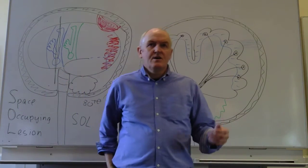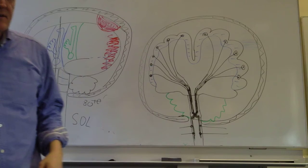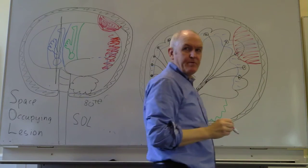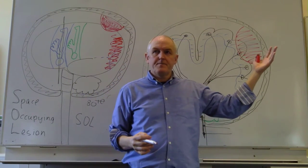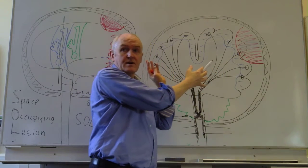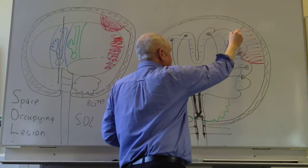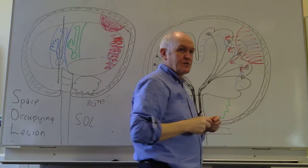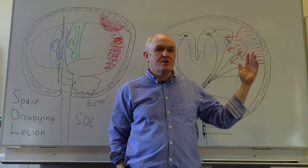Suppose someone's been bashed on the left-hand side of their head. They might be developing a space-occupying lesion — it could be a haematoma, for example, or developing cerebral contusion. So they've got a space-occupying lesion on the left side. That's going to increase intracranial pressure all over, but first it's going to press on the left side of the brain — specifically, it's pressing on the left motor cortex, compressing it.